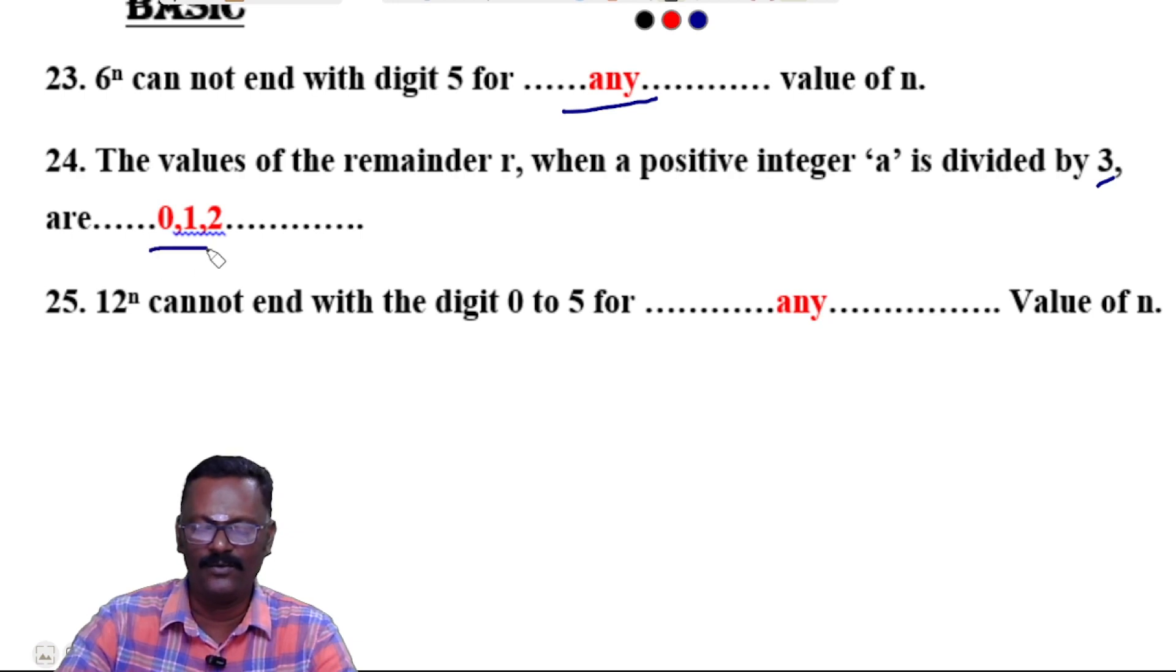Question 25: 12^n cannot end with the digit 0 to 5 for any value of n. Thank you.